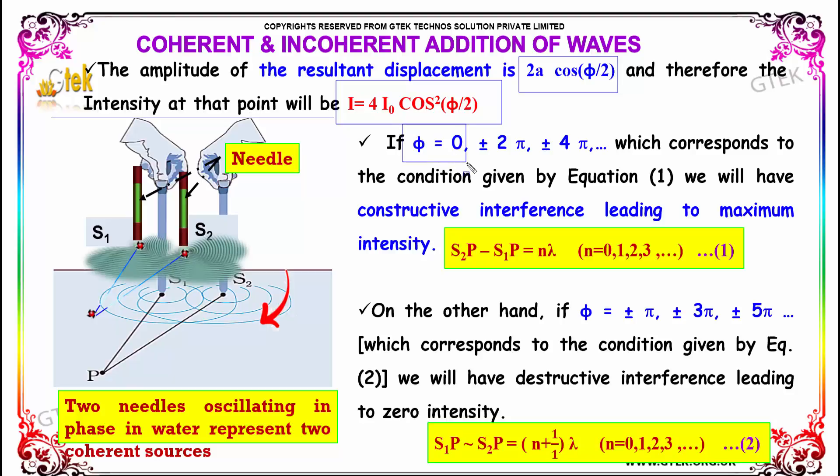If φ = 0, ±2π, ±4π, and so on, this corresponds to the condition given by equation 1. We will have constructive interference leading to maximum intensity.